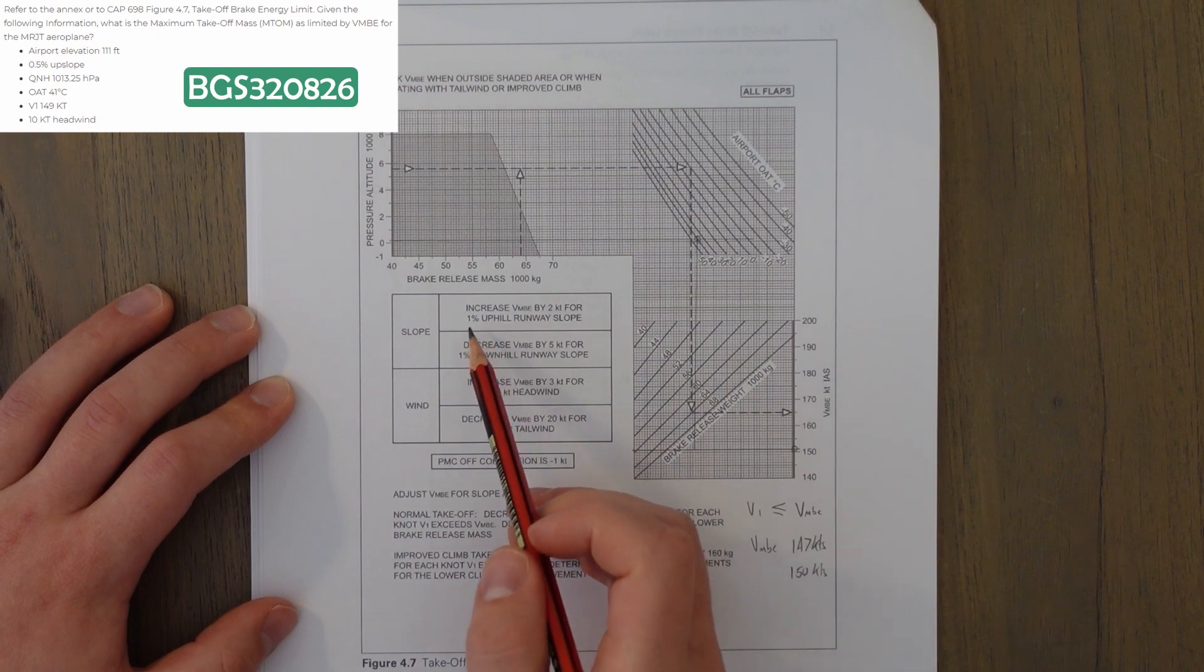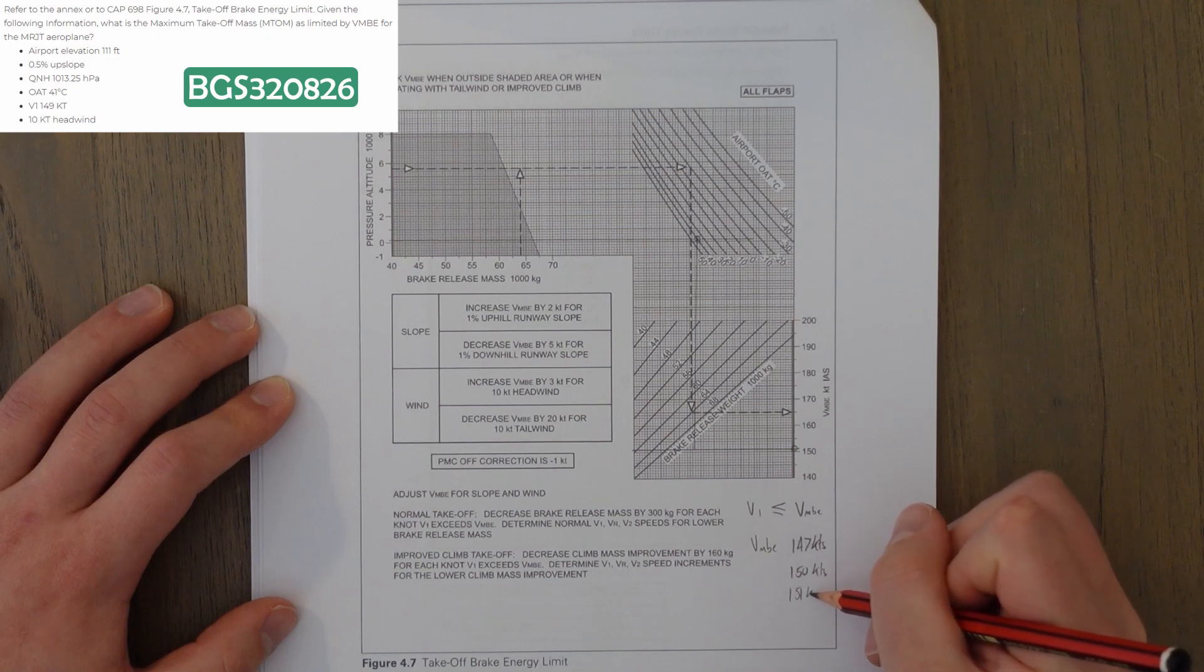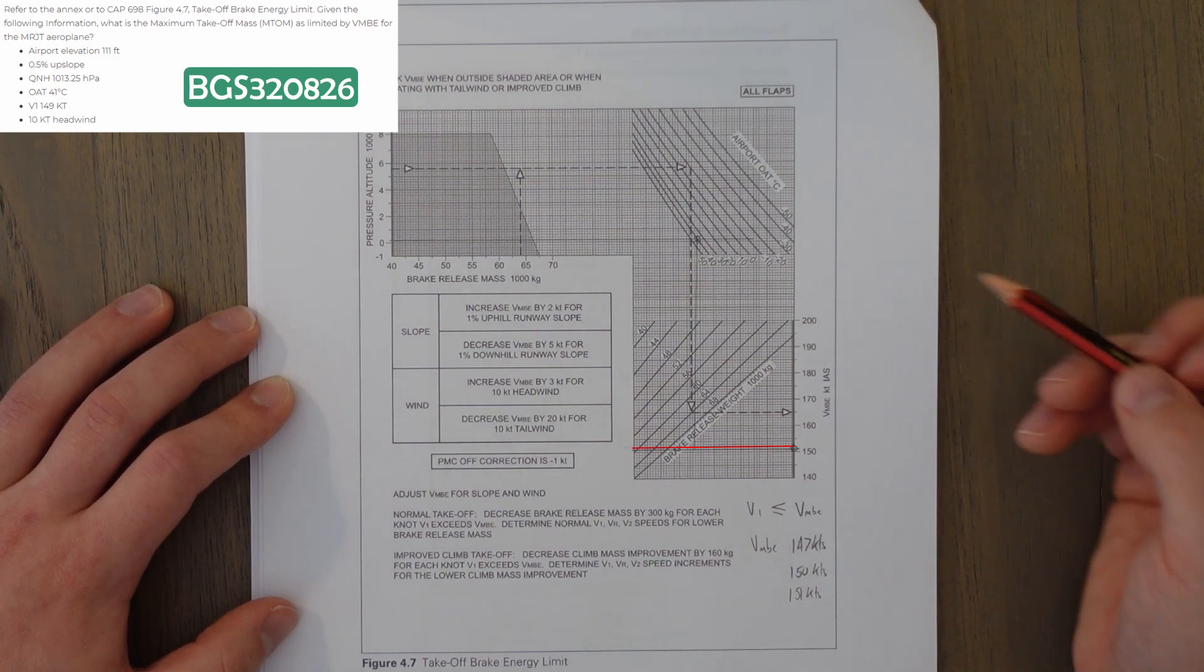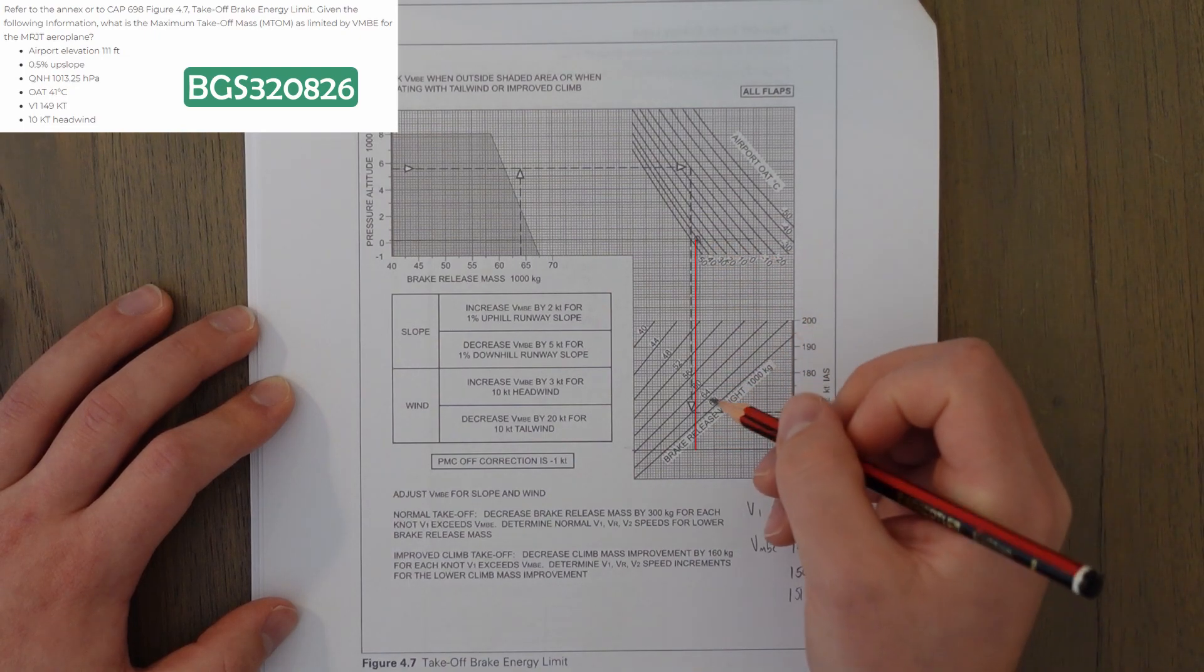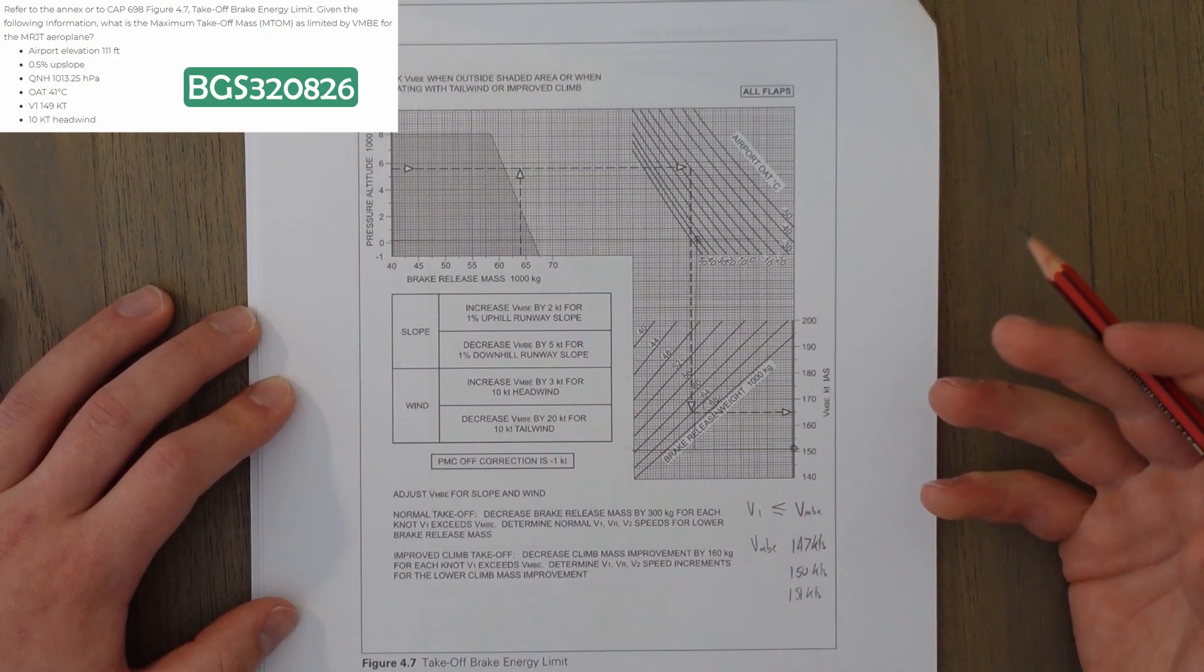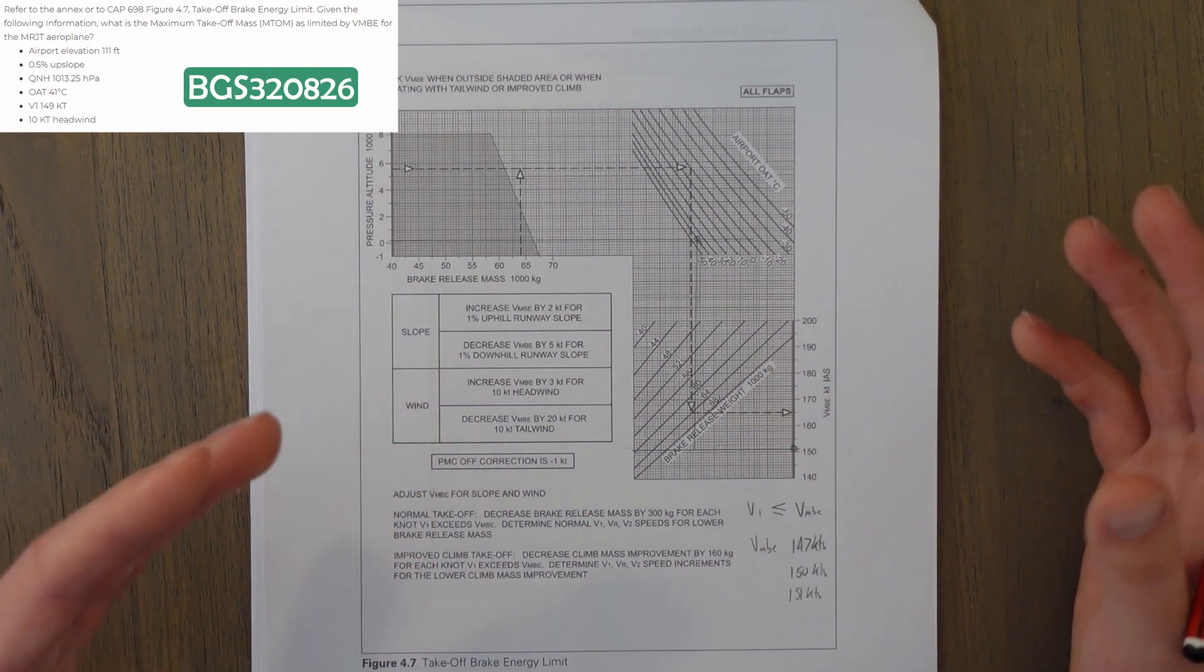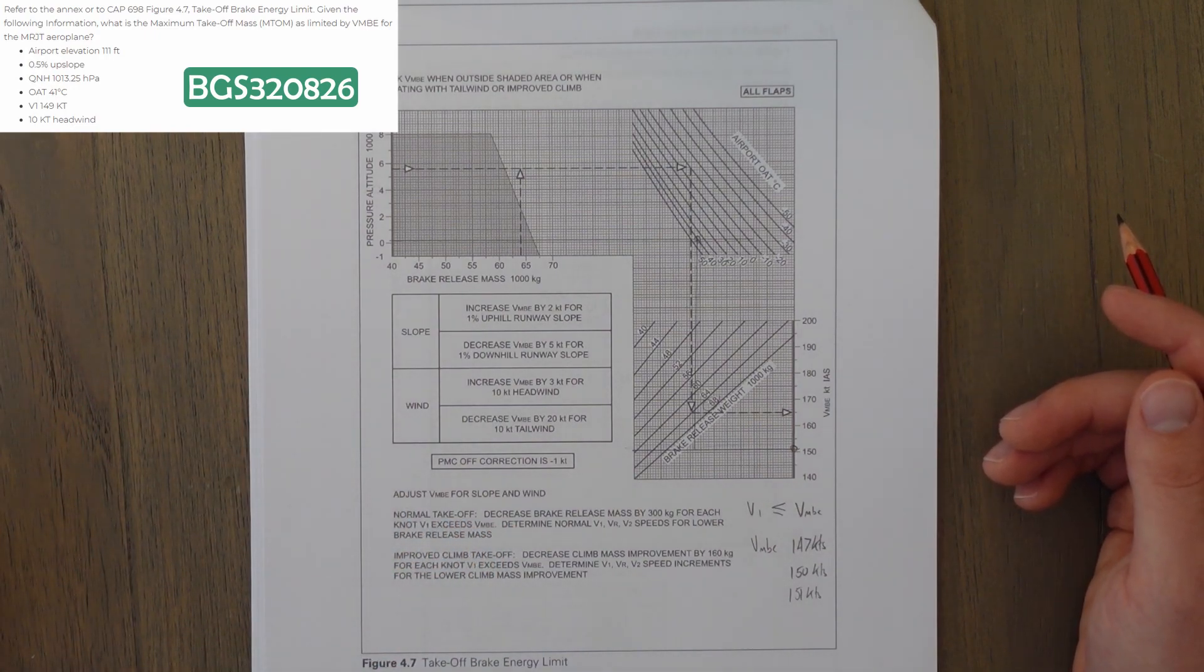And then we can correct for the slope as well. 1% upslope means 2 knots, so 0.5% would mean 1 knot. 151 knots will be our value for VMBE, which is just here. And then I'm going to take that value across, all the way here. And if we match it up with our line for our pressure altitude and temperature, we can see that it's well below the 68,000 value here, which to me suggests that we can take off with more than 68,000 kilograms.